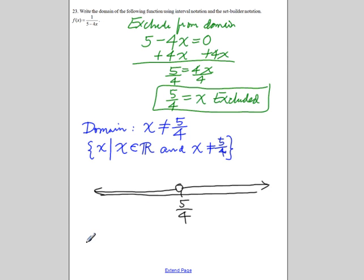The lower interval goes from negative infinity to 5 over 4, an open interval. The upper interval goes from 5 over 4, excluding 5 over 4, to infinity. The union of these two intervals is the domain.